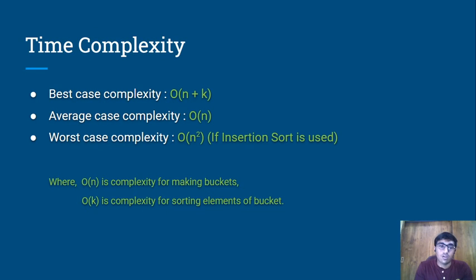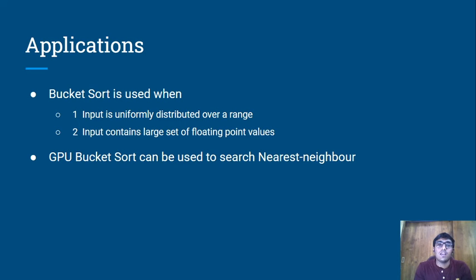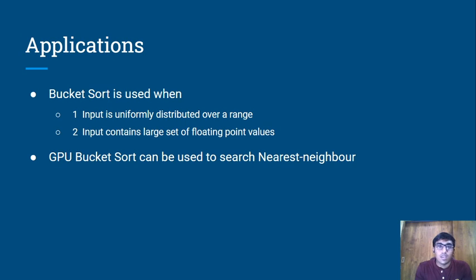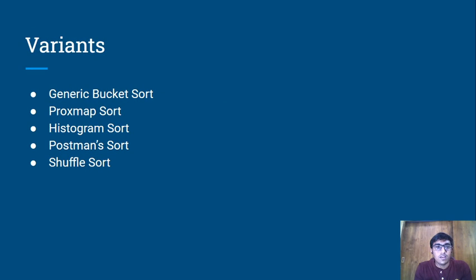The main application of Bucket Sort is when the given input range is uniformly distributed, and it is also useful for large sets of floating point numbers since we can easily multiply and assign them to buckets. Another application is in GPU computing, where it is used to find or search the nearest neighbor. The variants of Bucket Sort include generic bucket sort, proxmap sort, histogram sort, postman sort, and shuffle sort — the most widely used being generic bucket sort.